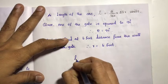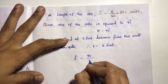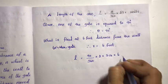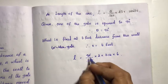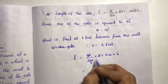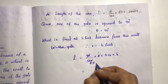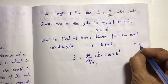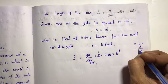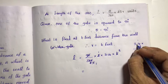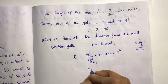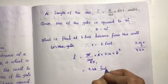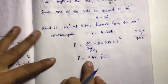Length of the arc equals theta divided by 360, into 2 pi r. That is 90 divided by 360, into 2 into 3.14 into 6. Cancelling: 90 over 360 gives 1 over 4. So we get 3.14 into 3, which equals 9.42. The unit is feet.